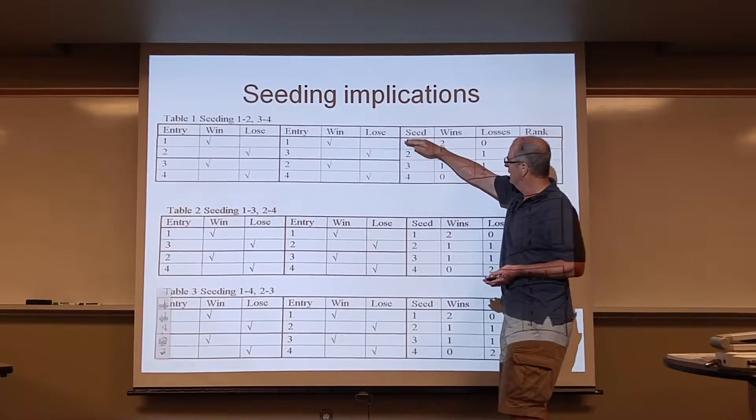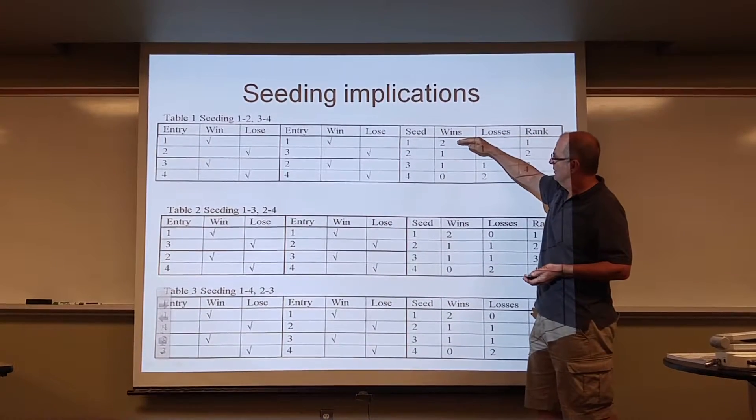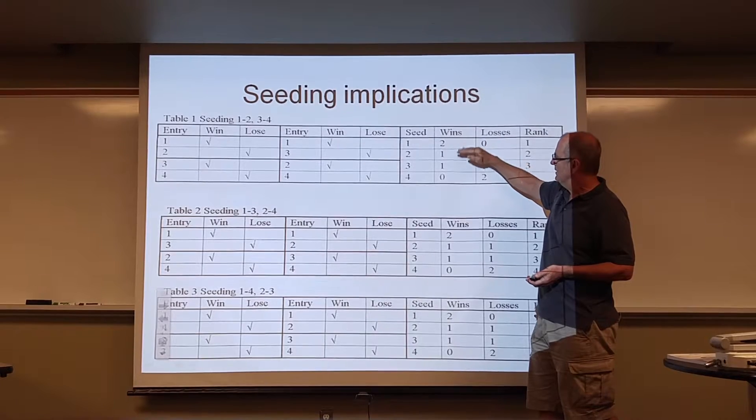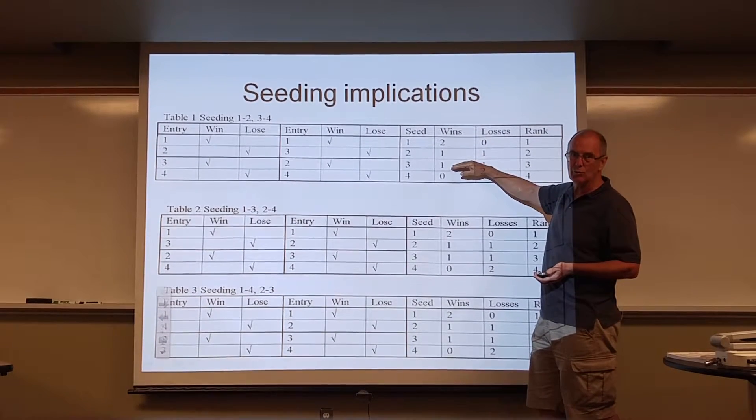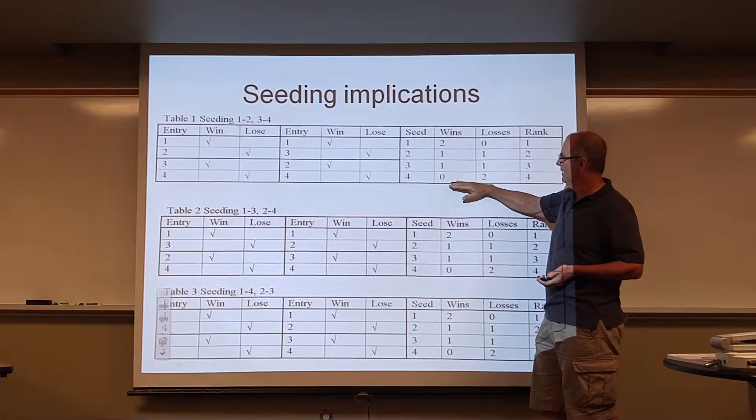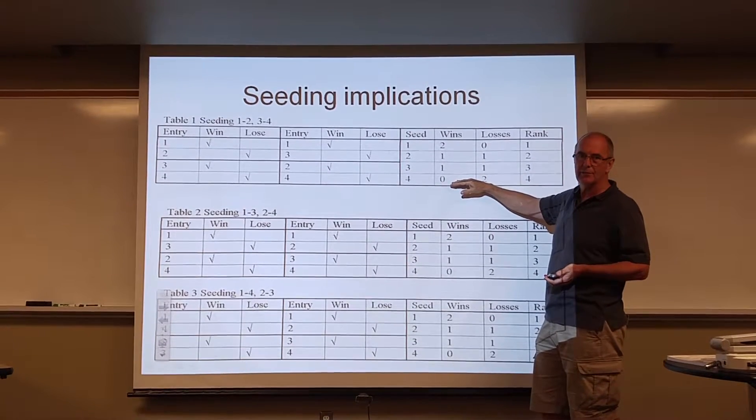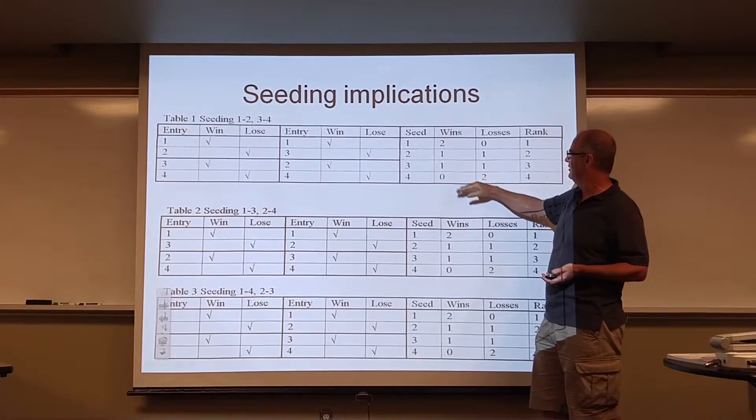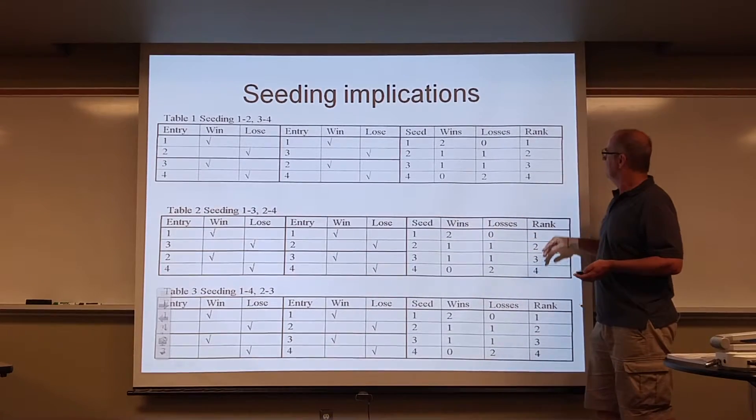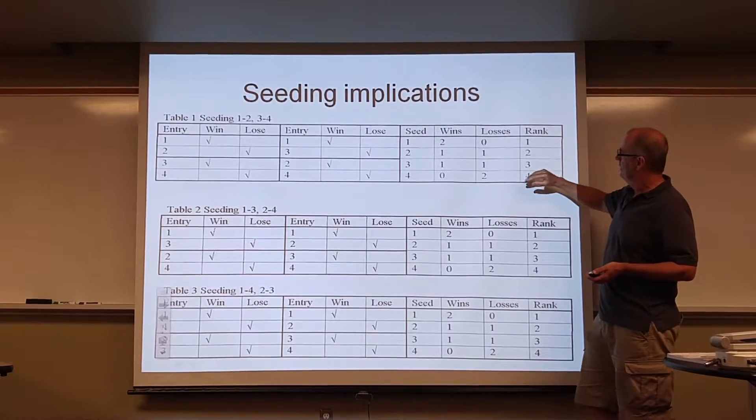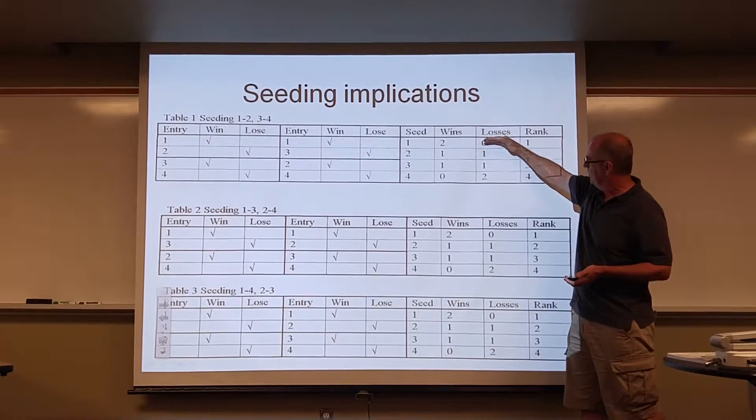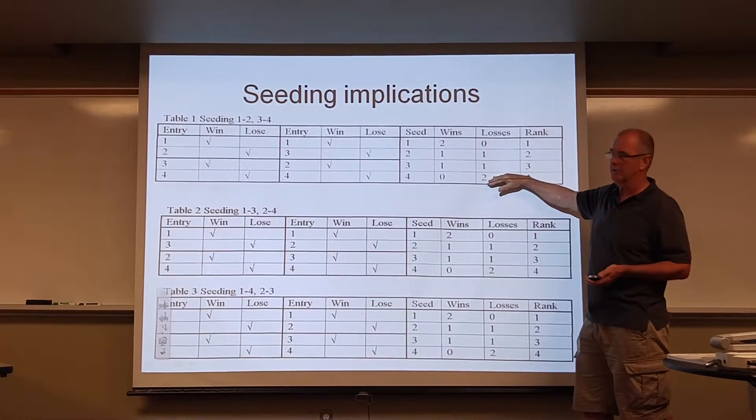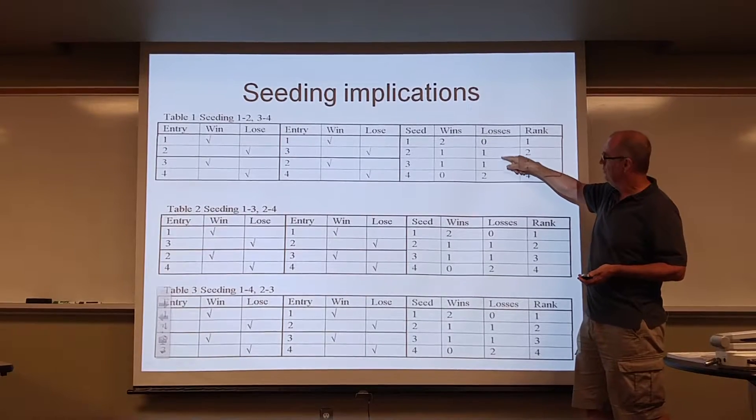So now we've got seed one won twice, seed two and three lost one and won one, so they would get one, and seed number four lost both of their games, so had zero wins. So how would we rank them? Well, basically you've got clarity of somebody who came in first, and clarity of somebody who came in fourth. We need to figure out who wins here.